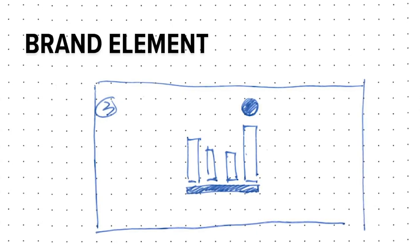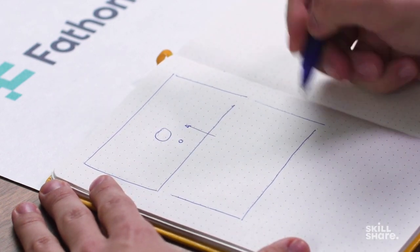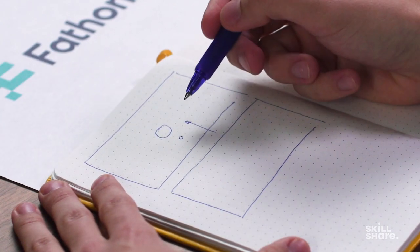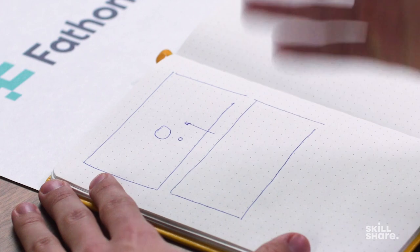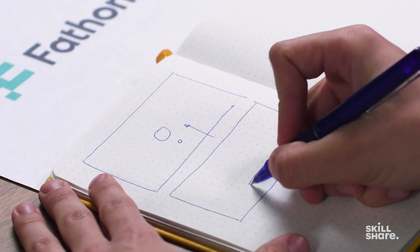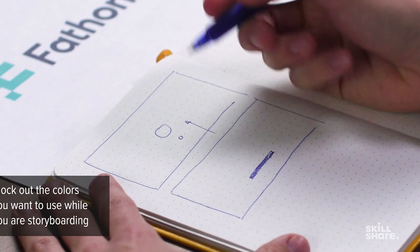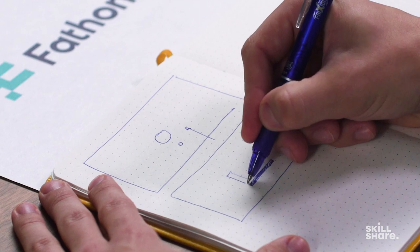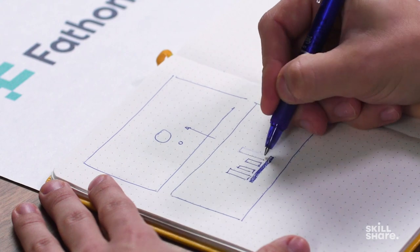Since Fathom deals a lot with charts, I want the brand element to be some type of chart, so we can pick a bar graph. Draw another 16x9 rectangle and work roughly to understand how the circle and bar graph relate compositionally. Sticking with a center composition, add a structure at the bottom to give the bar graph something to stand on. Adding blocks of color throughout your storyboards is helpful, and roughly draw a bar graph with varying heights to show some elevation.